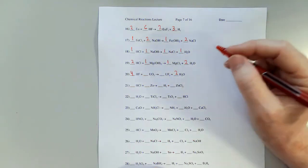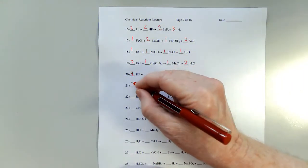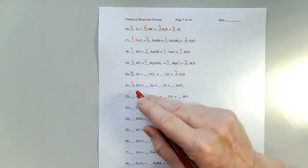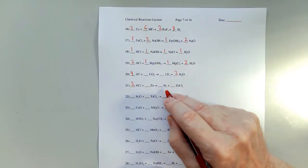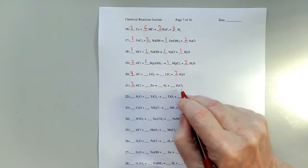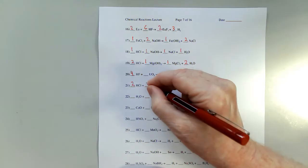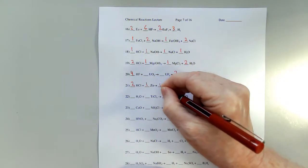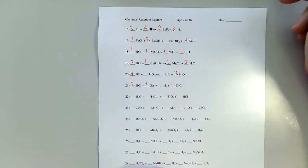In number 21, I need to put a two on the HCl because of two hydrogens and two chlorines, and that looks like it balances everything across the board now.